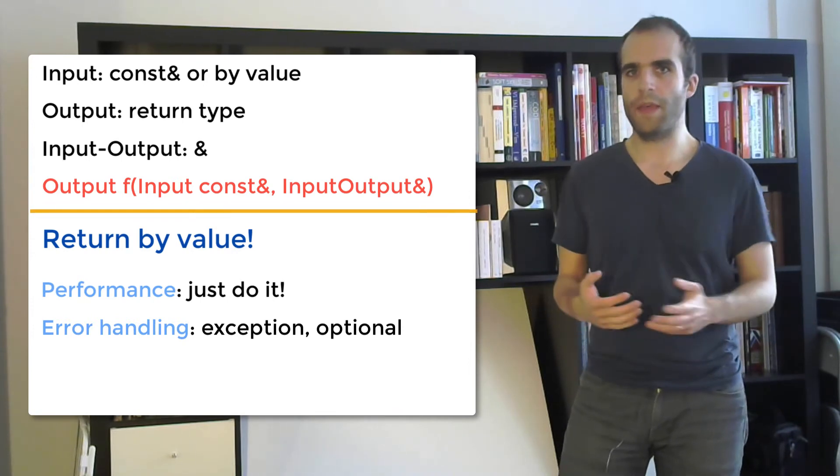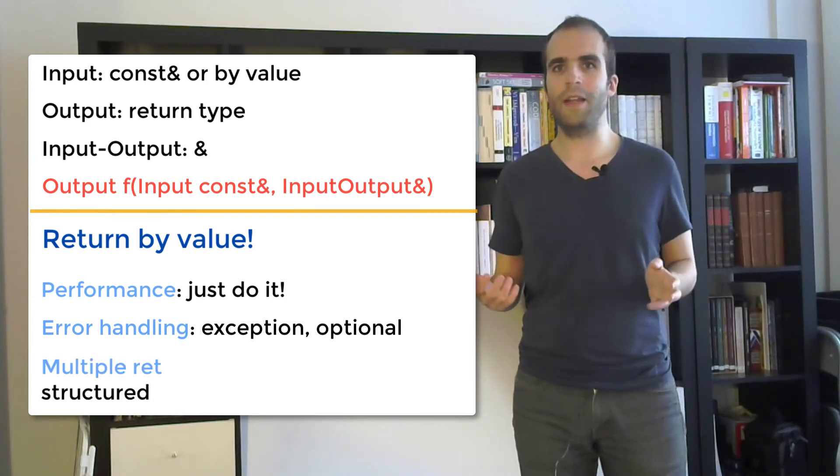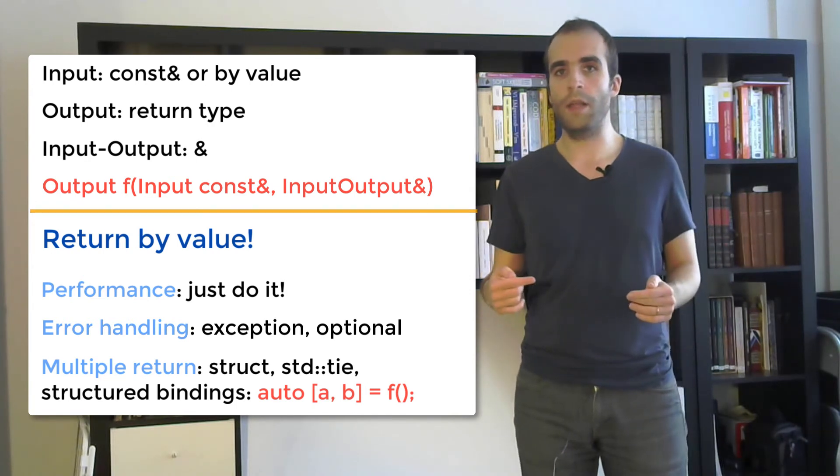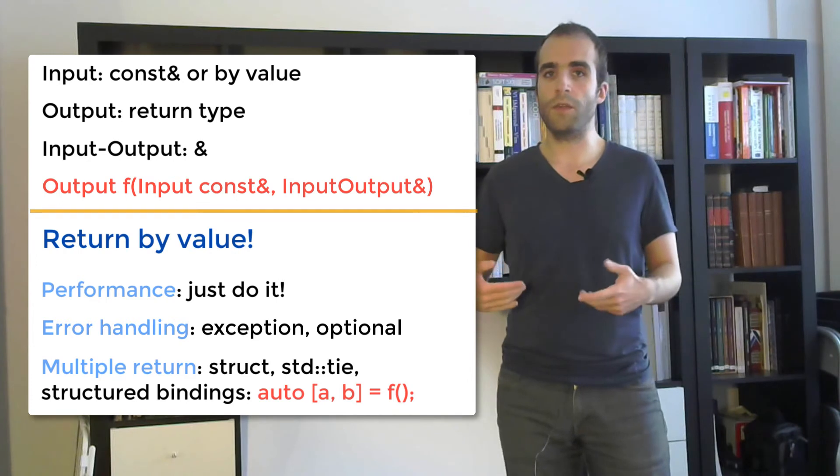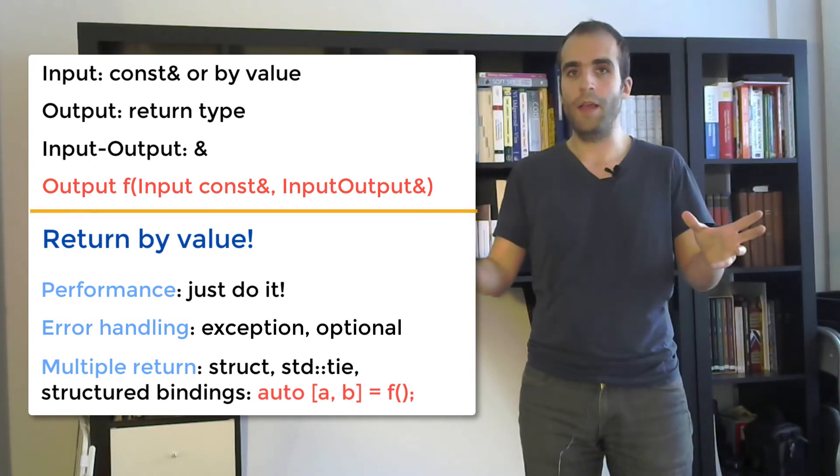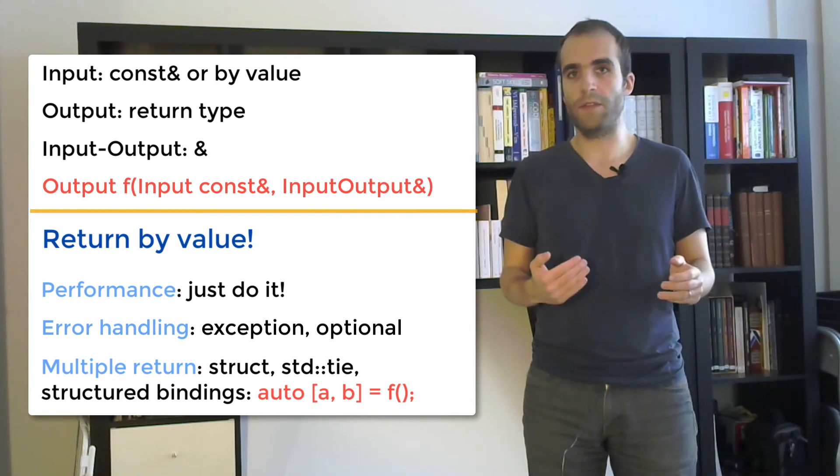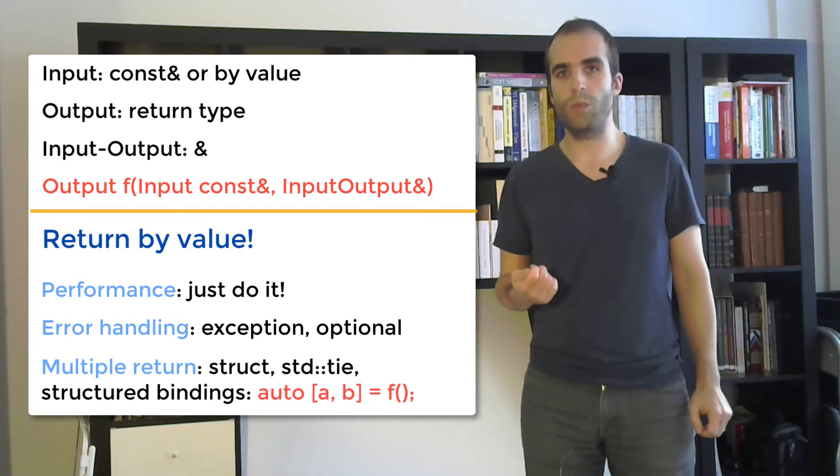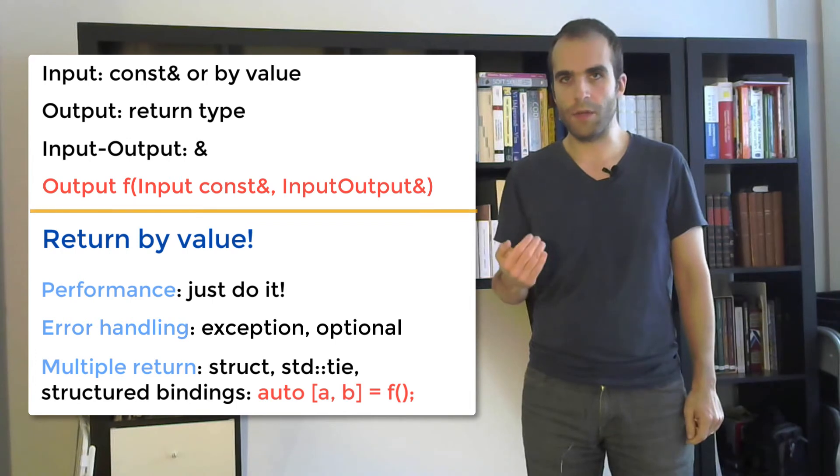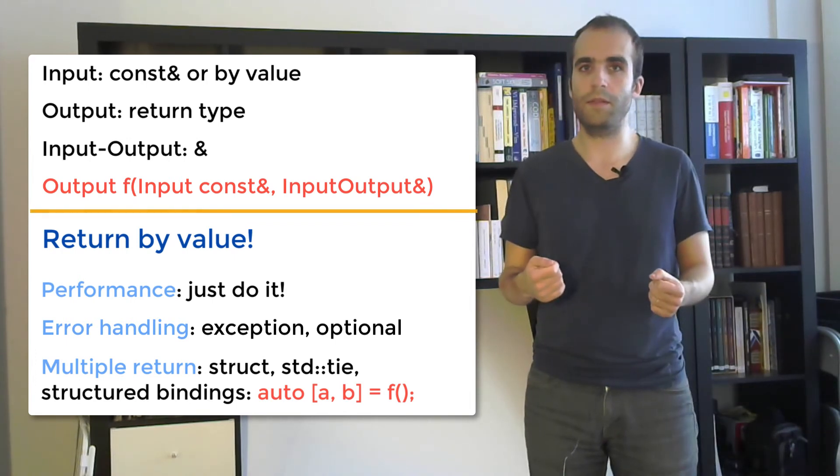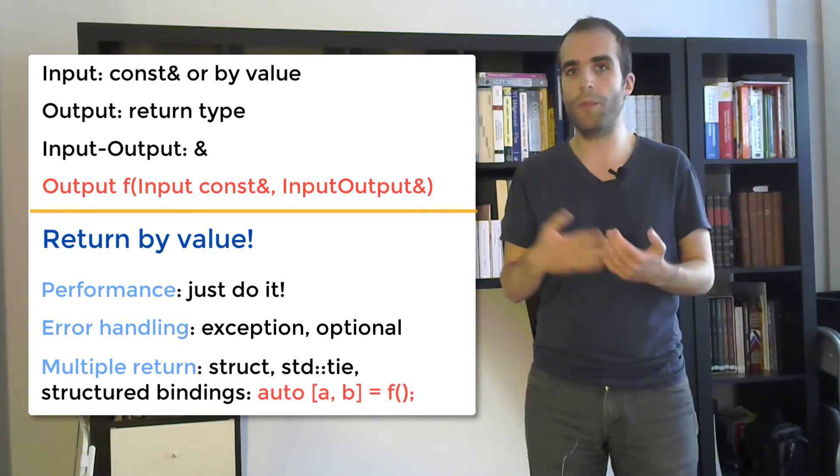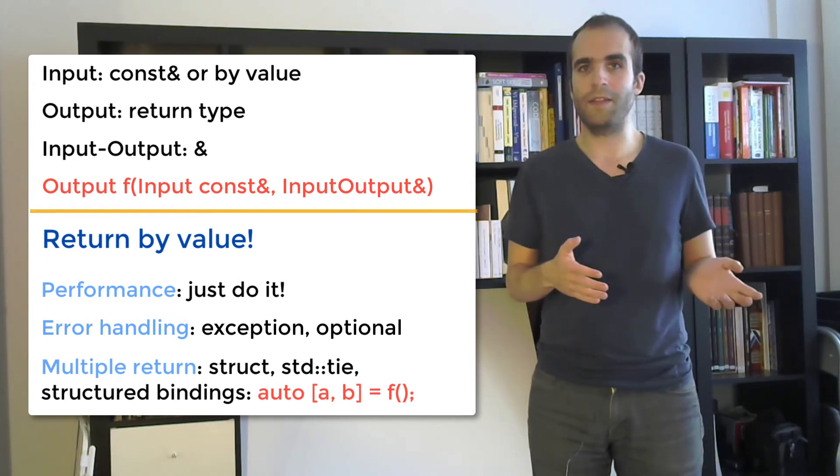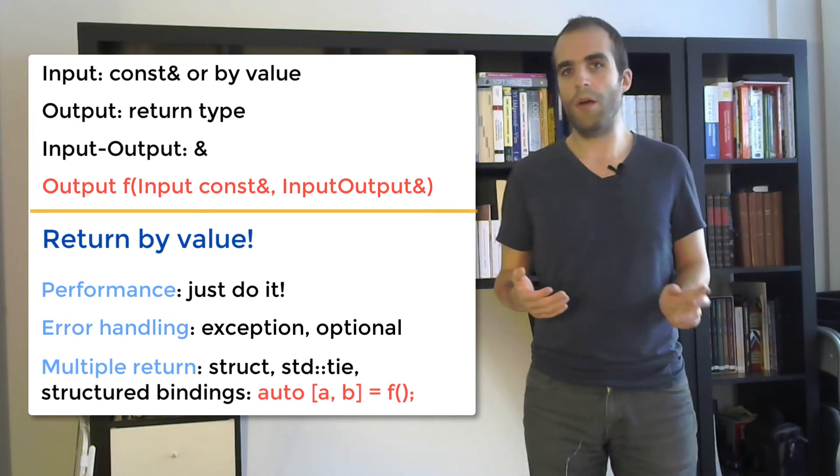Well we've got several options here. The first one which has been there since forever is returning a struct. So we define a struct for the purpose of that function and this struct contains several things and the function returns one big thing which is the struct and the struct contains several little things. The advantage of using that is that it's the most explicit way to do that because every member of the struct has a name and you can refer to it to know exactly which output is which, right?